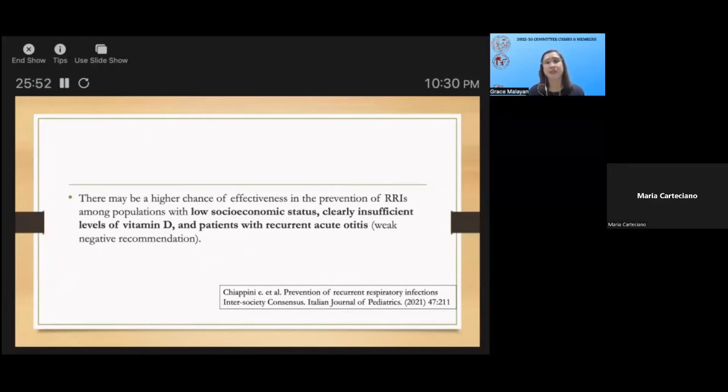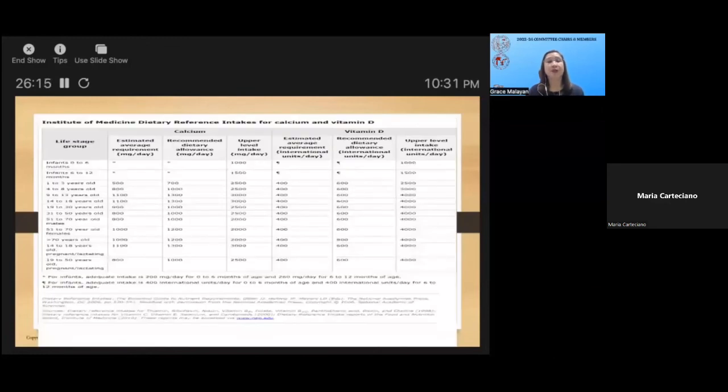In the Filipino population, maybe in the urban areas we will be having problems with the levels of vitamin D as opposed to the rural areas because of sun exposure. This is the table for the dietary reference intake both for calcium and vitamin D. For infants, the adequate intake or the average requirement for vitamin D among 0 to 12 months old is said to be 400 international units per day, and we should not exceed the upper limit of the recommendation.